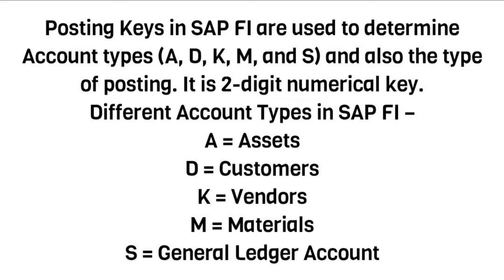It is a two-digit numerical key. Different account types in SAP FI: A is equal to assets, D is equal to customers, K is equal to vendors, M is equal to materials, and S is equal to general ledger account.